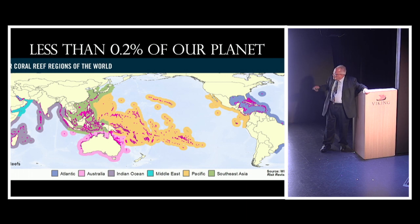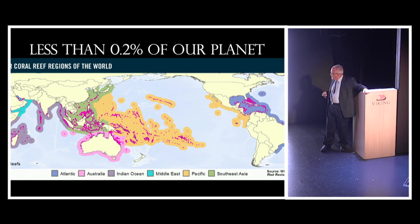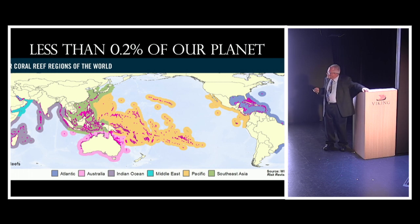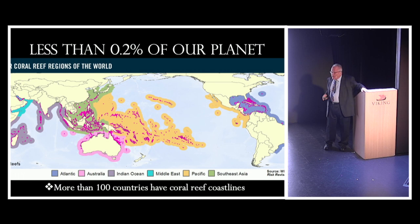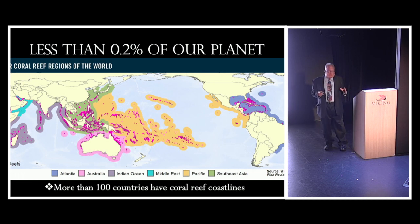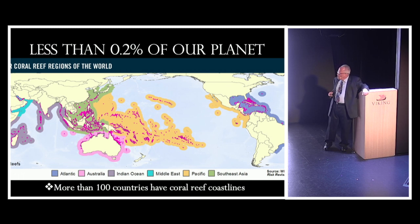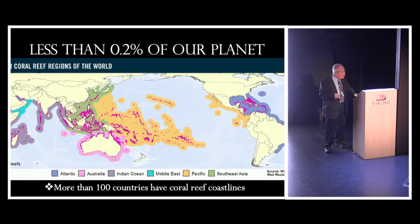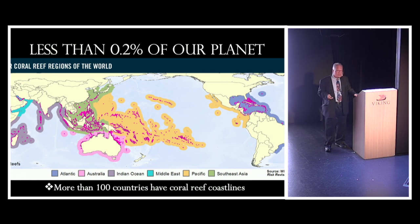You can see we're now in the Australian section of the reefs and we'll be moving up into the Southeast Asian reefs once we leave Darwin. Even though they occupy such a tiny part of the world's surface, they involve a great many countries — there are more than a hundred countries in the world that have coral reefs within their boundaries, that live on reef coastlines.